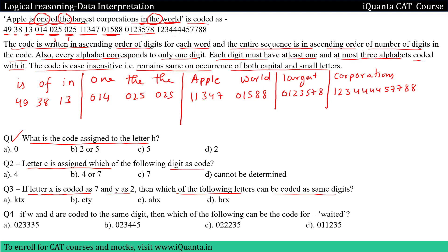If I come to the two-digit words, I have 'is' and 'in', in which I have one letter common, which is I. So what could be the possible code for 'is' and 'in'? We need to have one digit common. Between 'is' and 'in' there is one letter common, so one digit must be common. That happens only when I take 38 and 13, because in these two the common digit is 3, and the letter common is I. So I will directly write I = 3.